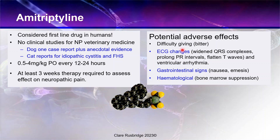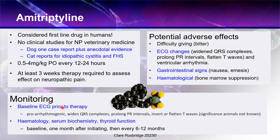The main adverse effect is sedation — humans on it will often describe feeling like a zombie, and often if you find a human who's been given this drug, they're very reluctant for their animal to have it because they don't want their animal to go through the same effect. More serious adverse effects include gastrointestinal signs like nausea and vomiting, hematological effects including bone marrow suppression with reduction in cell production, which means you need to monitor hematology. It can also affect the ECG, causing widened QRS complexes, prolonged PR intervals, flattened T waves, and even ventricular arrhythmia, which means a baseline ECG should be done prior to therapy.